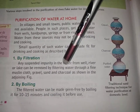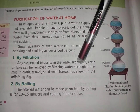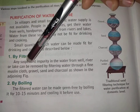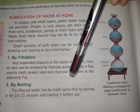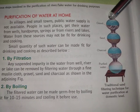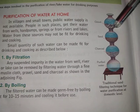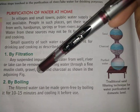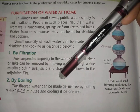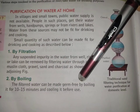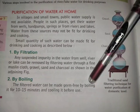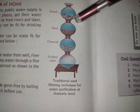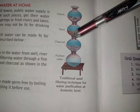The first home method is filtration. Any suspended impurity in water from a well, river, or lake can be removed by filtering water through a fine muslin cloth, and then through gravel, sand, and charcoal as shown in the diagram. First the muslin cloth filters the water, then it passes through gravel (stones), then through sand, and the filtered water collects in a pot below. Then this filtered water should be boiled for 10 to 15 minutes to make it germ free, then cooled before use.